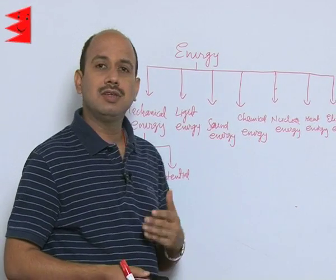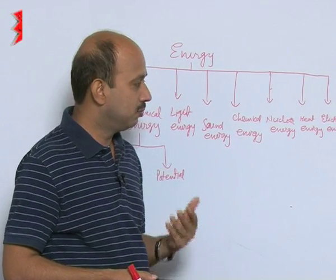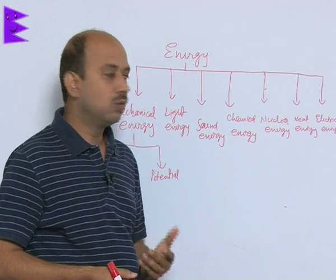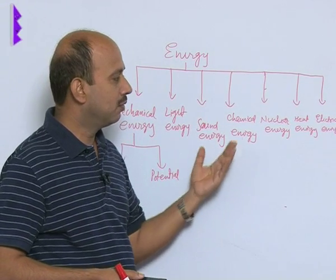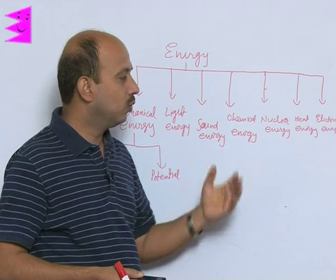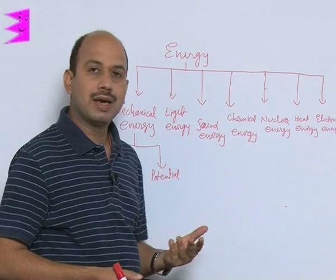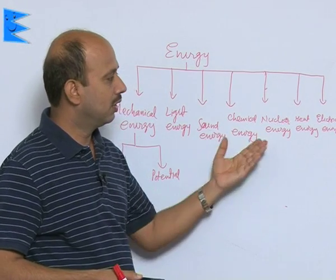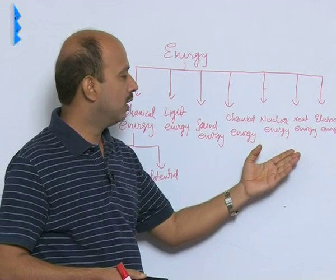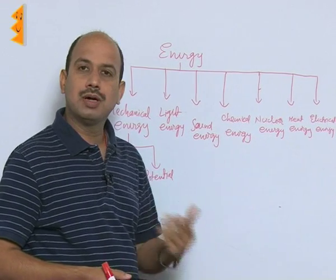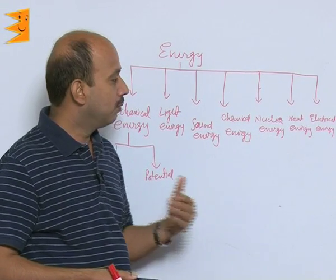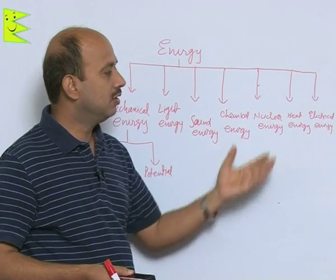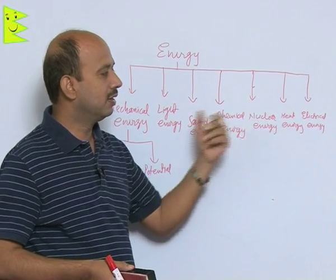Nuclear energy is a form of energy being used these days. Through nuclear fission and fusion, the nucleus of the atom is involved, and by nuclear reactions we can get energy — like in nuclear power plants, we are using nuclear energy. Heat energy: when we burn something, chemical energy is converted into heat energy, so we get heat energy.